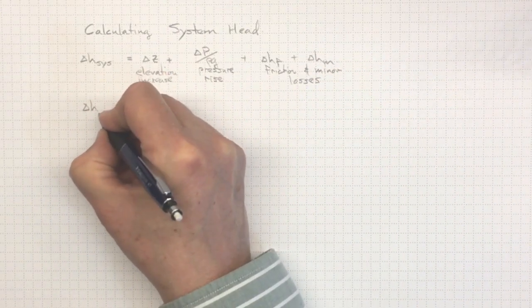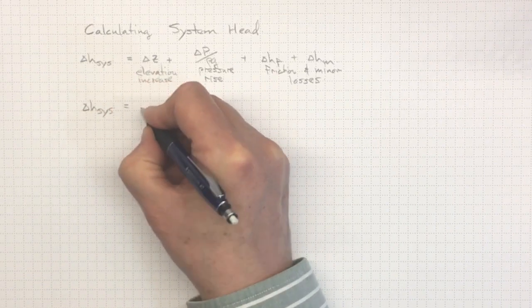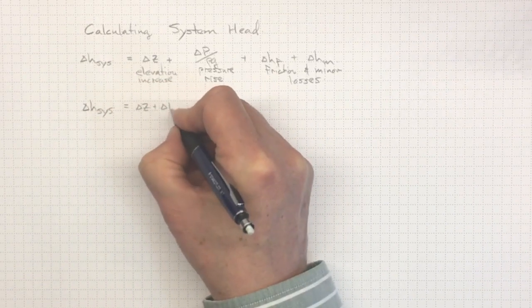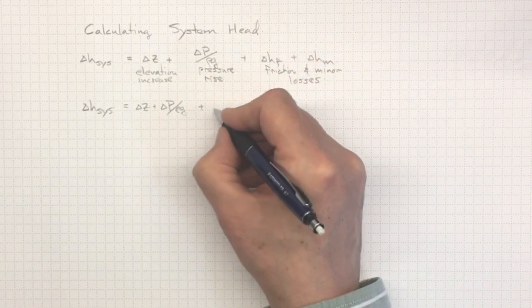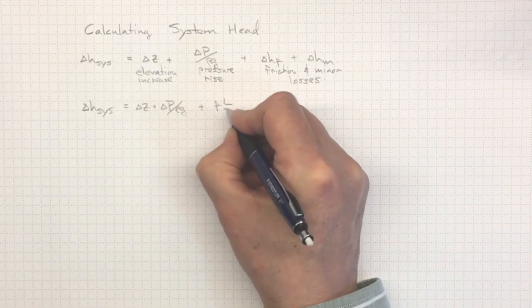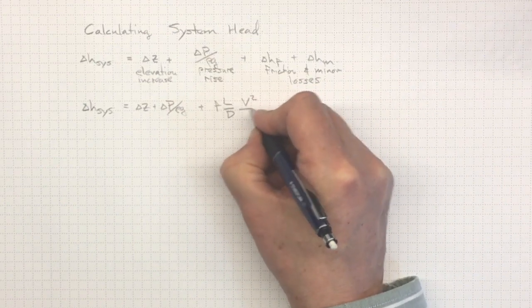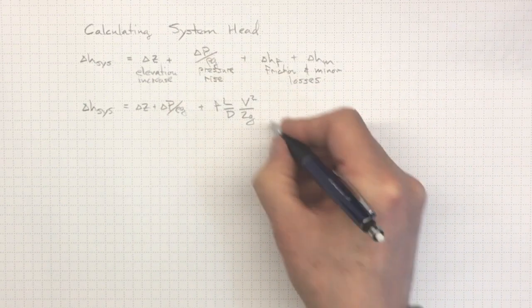The system head rise will be delta Z plus delta P over rho G, plus head loss due to friction. That's the friction factor times the length divided by diameter times V squared over 2G.